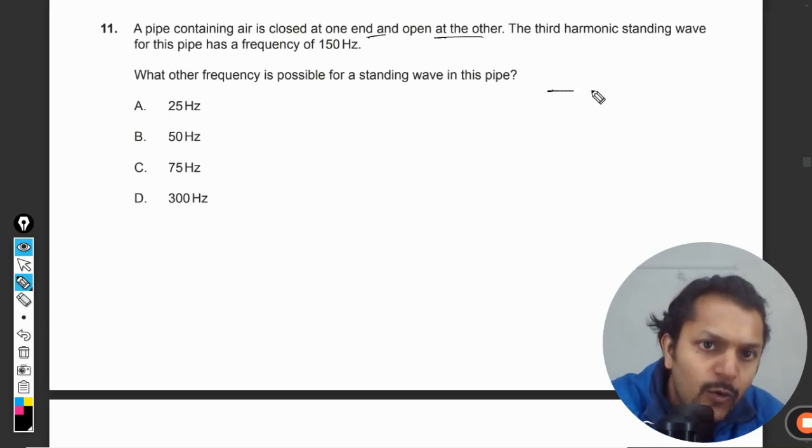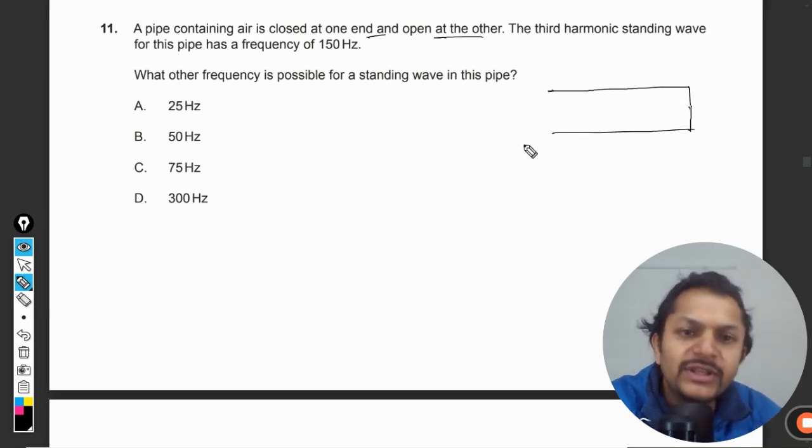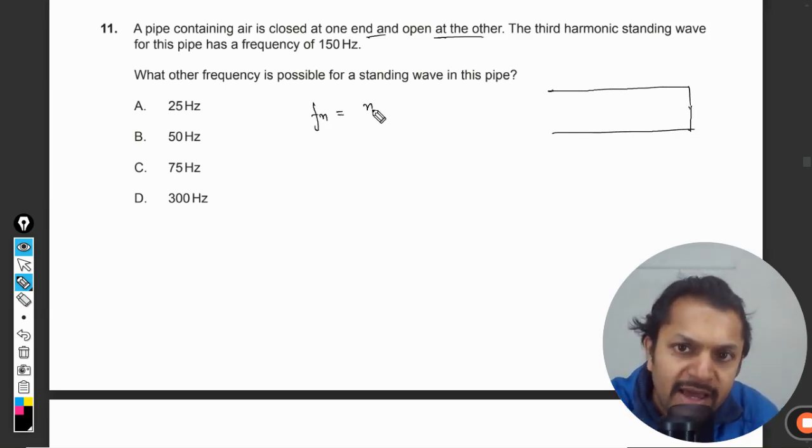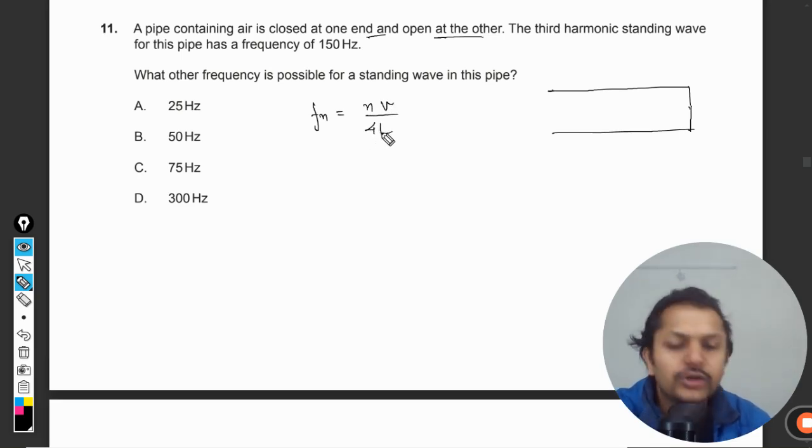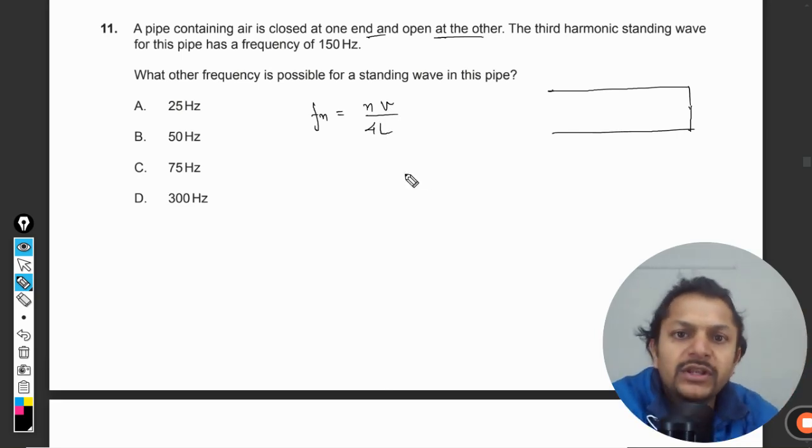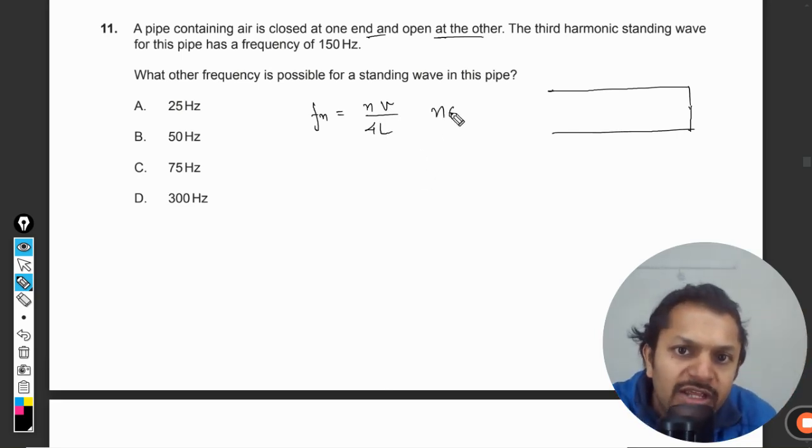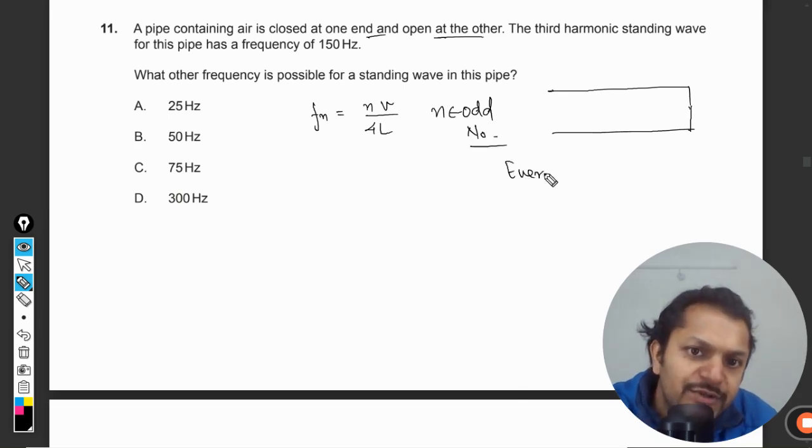One end of the pipe is closed and one end is open, so in this case we know that the general formula for this is given by n times v divided by 4L, because one end is closed and one end is open, where n can be only odd number, so even harmonics are absent.